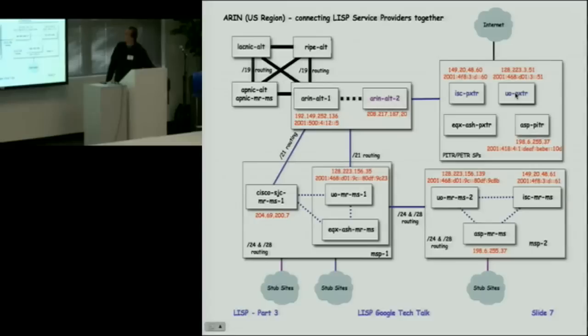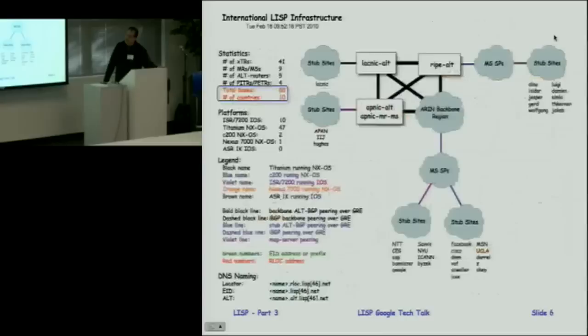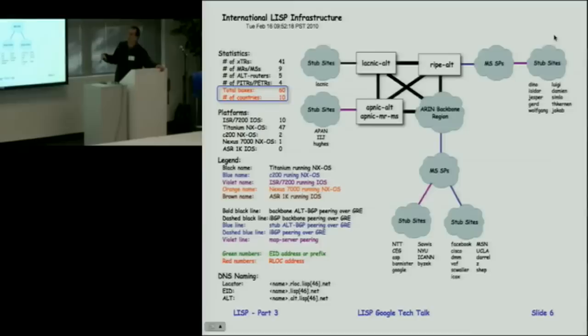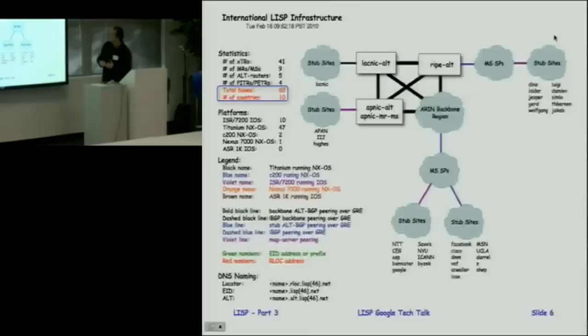There is a FreeBSD implementation of LISP called OpenLISP being done by Luigi and Damian out of Germany and Belgium, and the test network is designed to support multiple implementations. There are five distinct implementations of LISP right now, and at the last IETF there was an interoperability test. The implementations include OpenLISP by Luigi, a Linux implementation by two IETFers, iOS, NXOS, and a Click implementation that runs on MacOS.